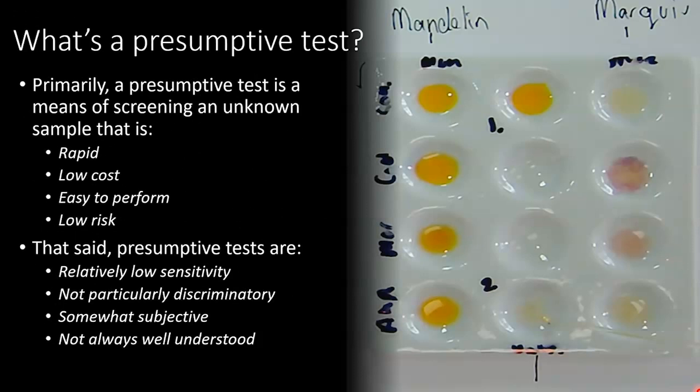So what is a presumptive test? Primarily, a presumptive test is a means of screening an unknown, usually illicit, drug sample. The test is rapid, typically completed in a few minutes, low cost, and easy to perform even by someone with minimal or no scientific training, as well as low risk.